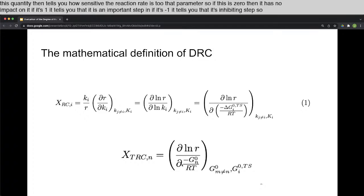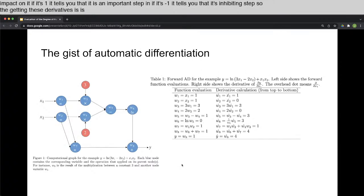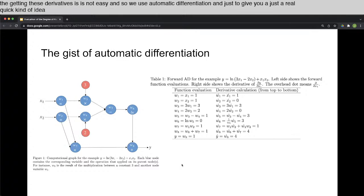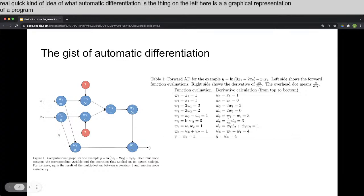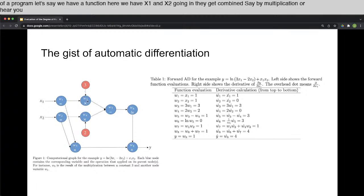So getting these derivatives is not easy, and so we use automatic differentiation. Just to give you a real quick idea of what automatic differentiation is, the thing on the left here is a graphical representation of a program. Let's say we have a function here. We have x1 and x2 going in. They get combined by multiplication, or here you multiply it by a number, multiply it by another number, subtract those two numbers, take the log of it, and then combine it with this, and now comes y.